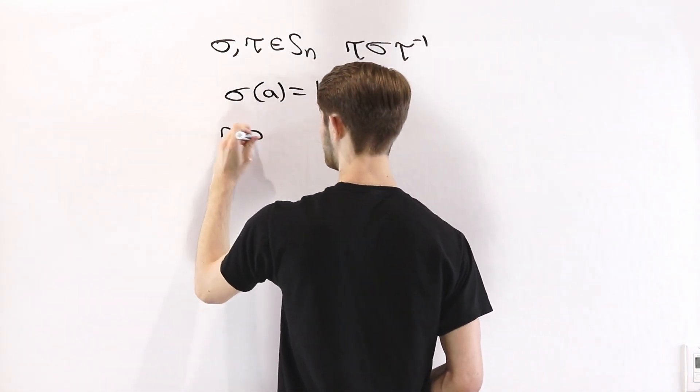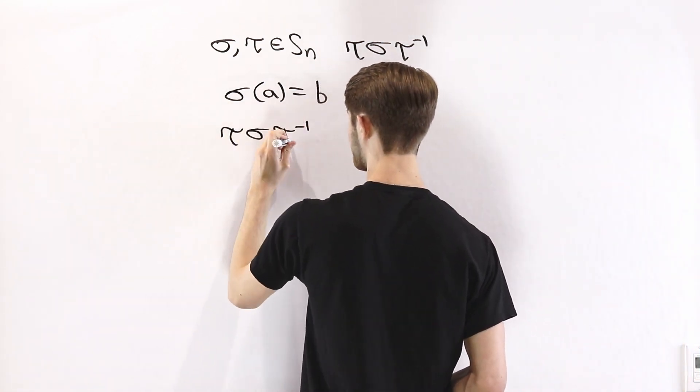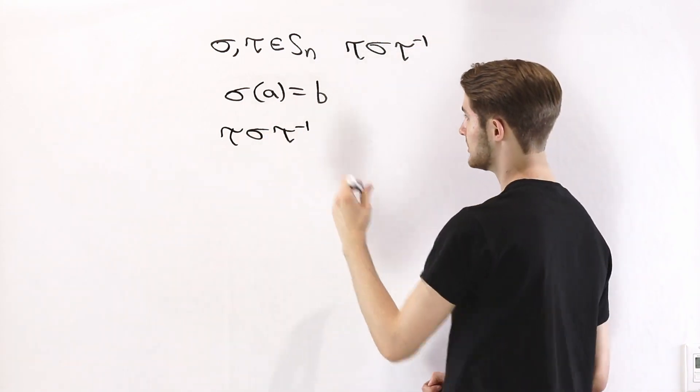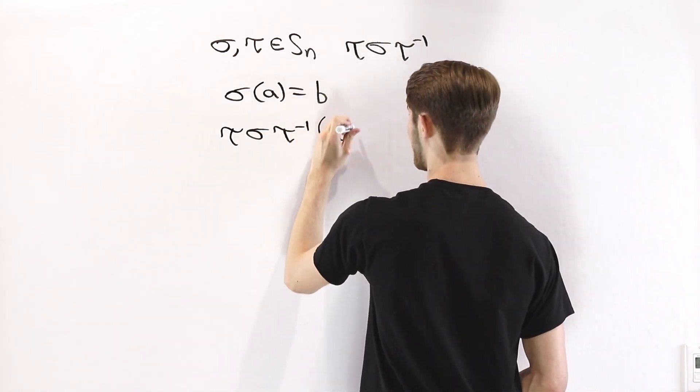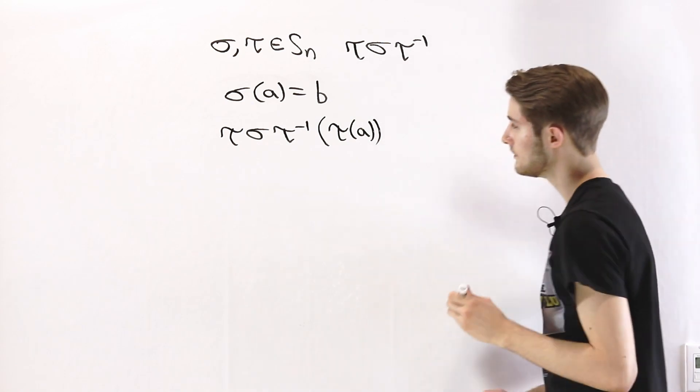Well, if we have tau sigma tau inverse, say we apply this conjugation to tau of A. If we do that, tau inverse times tau, those are going to cancel out.